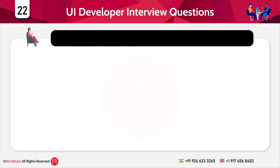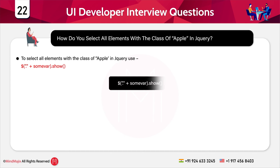The next question is: how do you select all the elements within a class in jQuery? To do this, you use the $ selector with a dot followed by the class name in round brackets, and then use the .show() method. This will select all the elements within the class in jQuery.